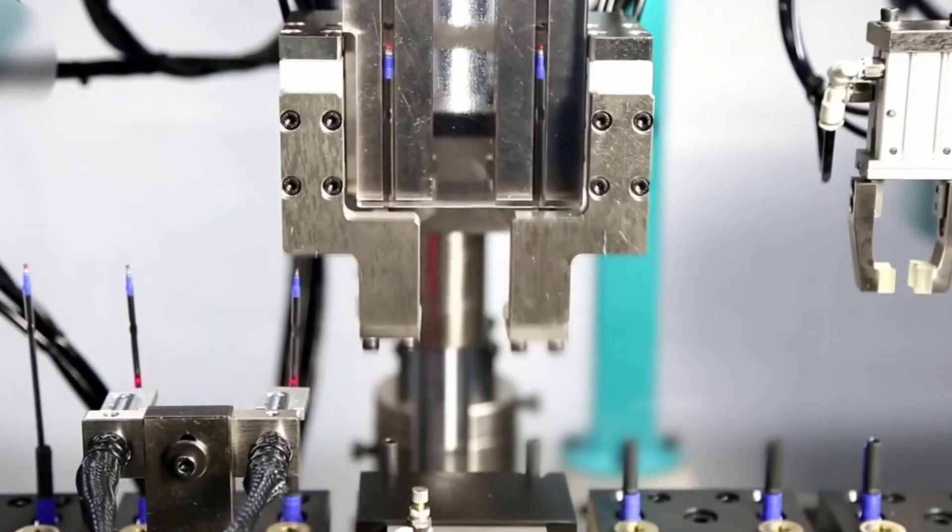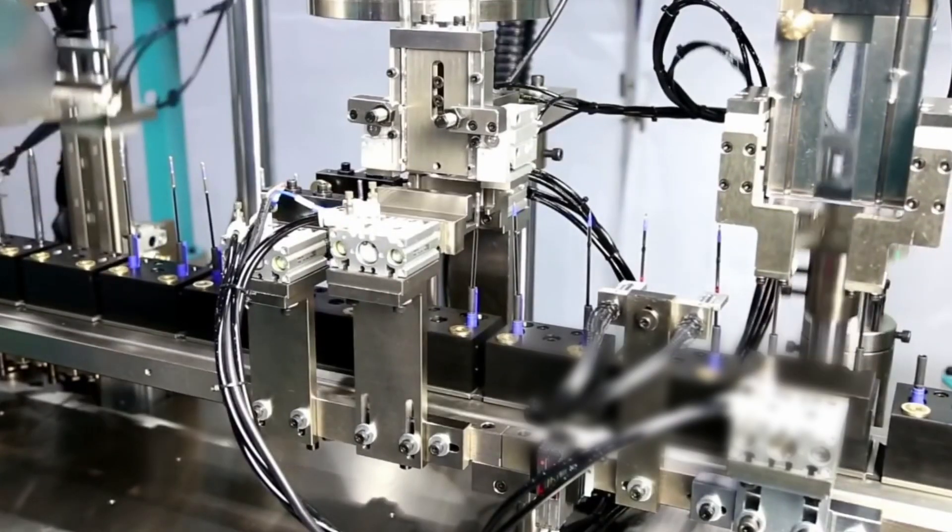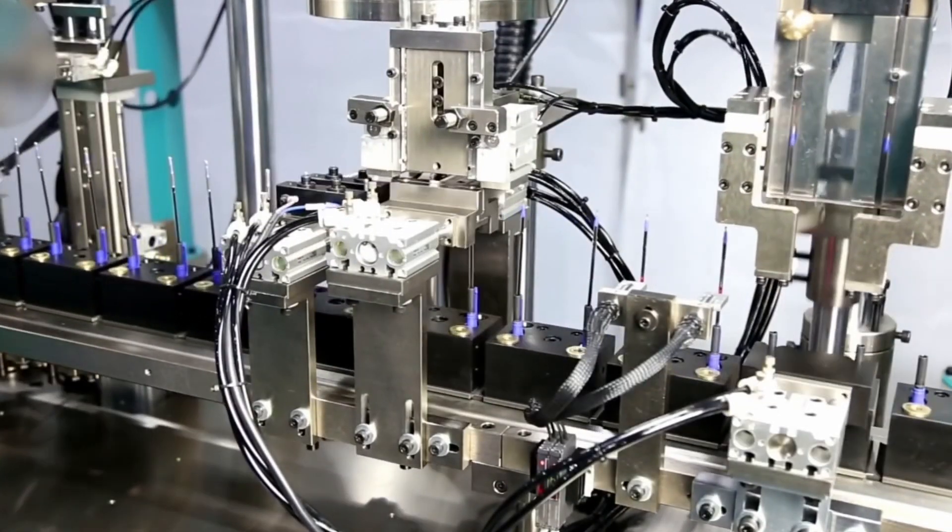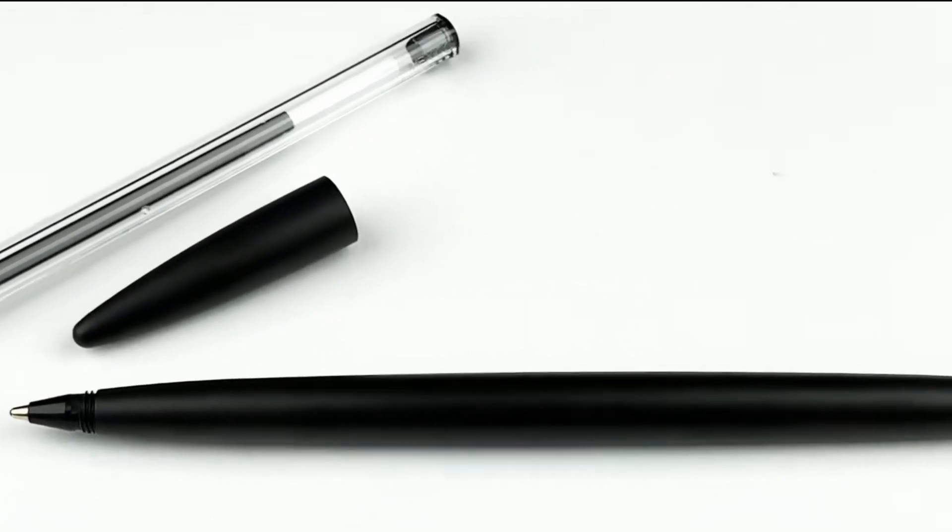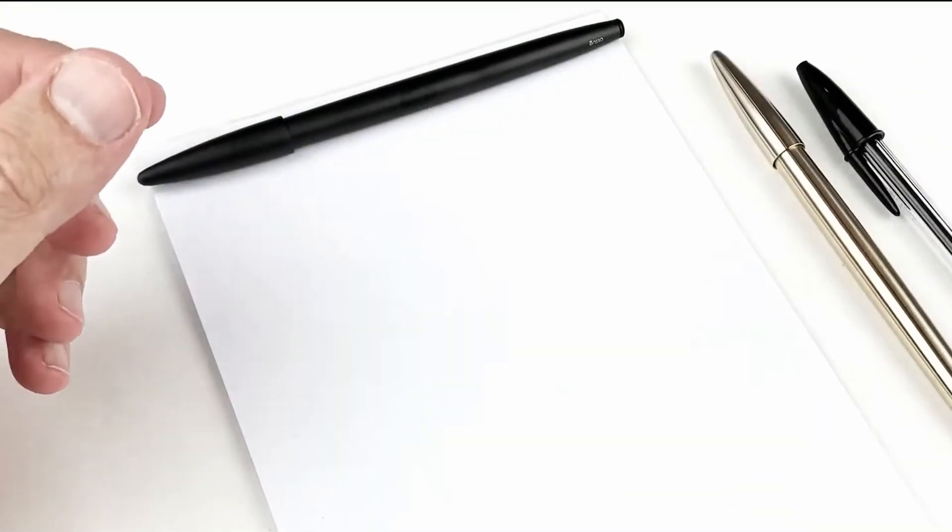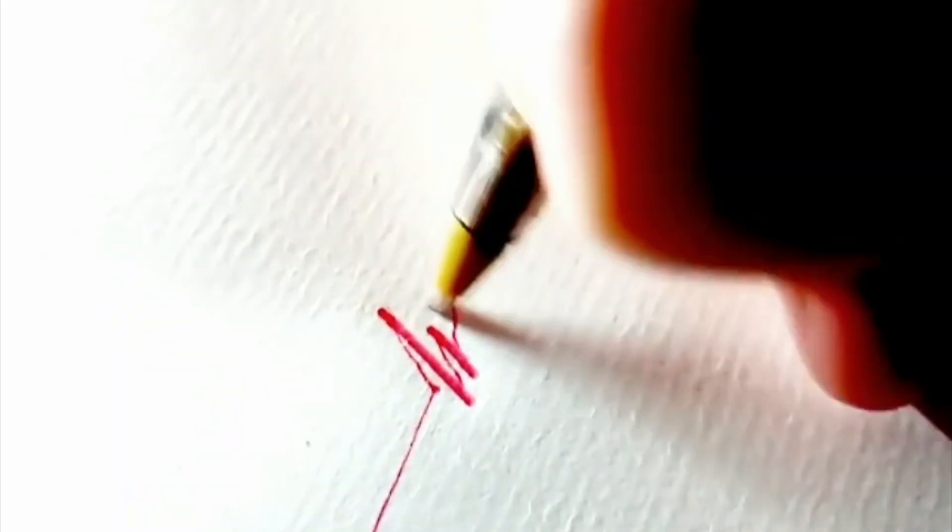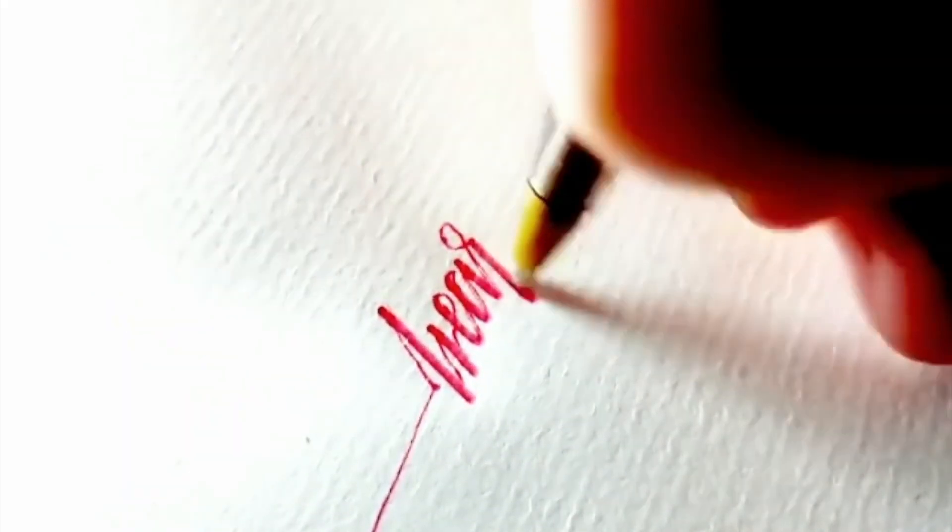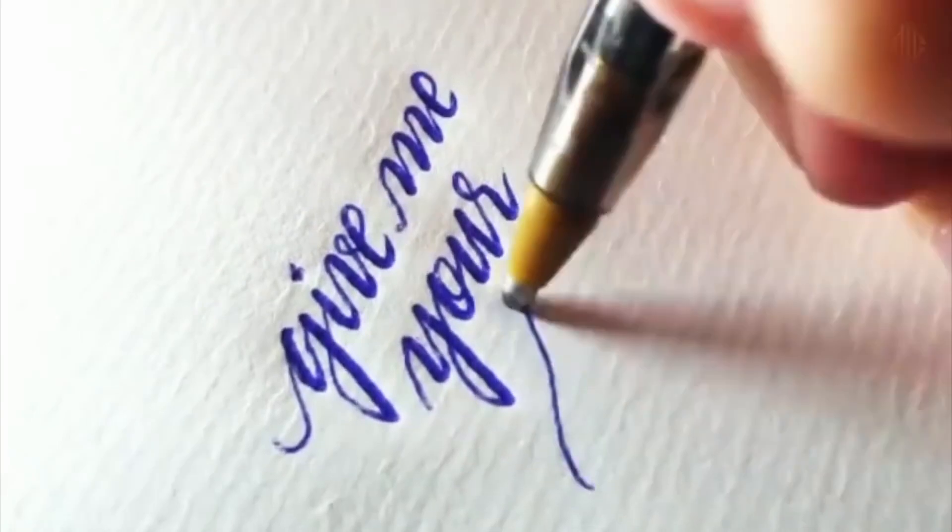Overall, quality testing involves looking closely at every part of the pen's performance from how well it writes to how well it holds up under stress. This is done to make sure that the finished product meets the high standards of everyday use and what consumers expect.